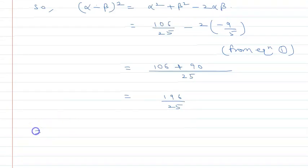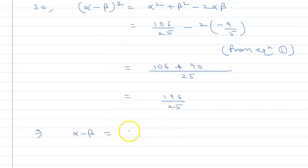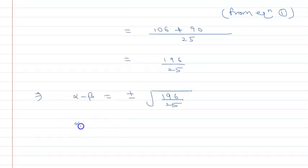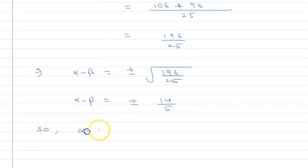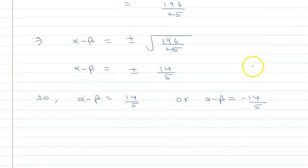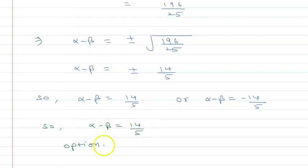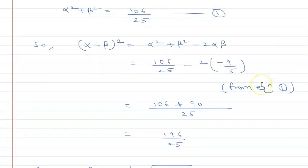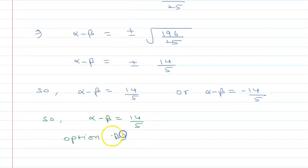So alpha minus beta whole square equals 196 upon 25. Taking the square root, alpha minus beta equals plus or minus square root of 196 upon 25, which gives plus or minus 14 upon 5. So alpha minus beta is either 14 upon 5 or minus 14 upon 5. Looking at the options, 14 upon 5 corresponds to option B, which is the correct answer. I hope you understood. Thank you.